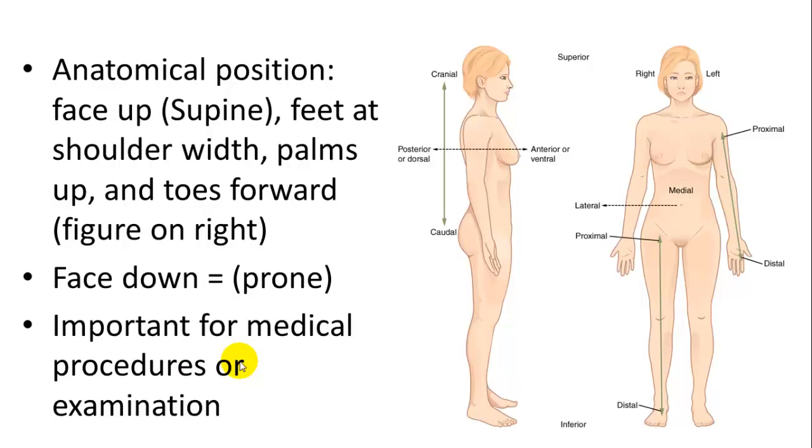There is also a term called anatomical position. This is a standard position for observing an anatomical specimen in completion. You have a whole body or a cadaver in front of you. The position is face up, feet at shoulder width, palms up and toes forward. This figure on the right is in the anatomical position. Face down means prone or pronate. That would not be anatomical. This is important for medical procedures. If you're going to amputate somebody's leg, you need to make sure they are in the anatomical position as opposed to the pronate position or you're going to amputate the wrong leg, which has happened before.